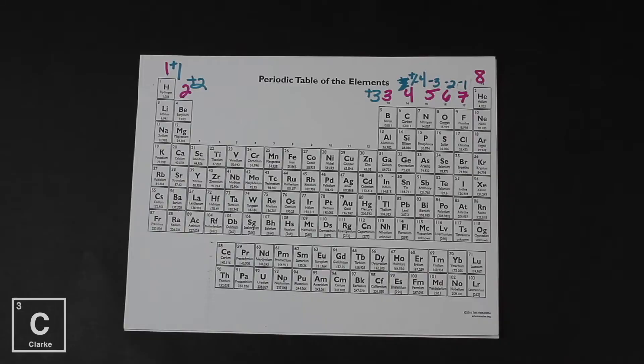Here we are at the halogens — group 17, seven valence electrons. They're only one away from the octet, which is why they're so reactive. Alkali metals are the most reactive metal group because they're farthest from the octet; halogens are the most reactive non-metal group because they're so close to reaching the octet. So they're going to gain one electron — everything in the halogens gets a negative one charge. Group 17: seven valence electrons, negative one oxidation number.